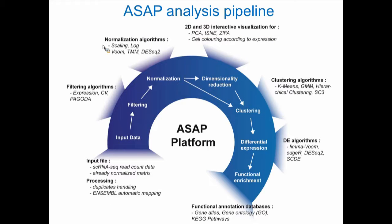The pipeline takes a read count matrix as input — already normalized or with normalization available within the platform. You can do filtering based on expression-based coefficient of variation, normalization based on simple scaling, 2D and 3D interactive visualization, dimensionality reduction, clustering, initial differential gene expression, and gene ontology. For online users watching this: the video will end here, but a demo will be added to the YouTube video. For those who came to the hall, we'll show this working in real time.